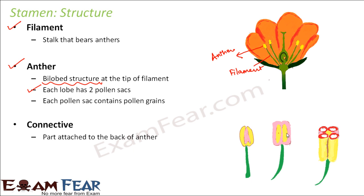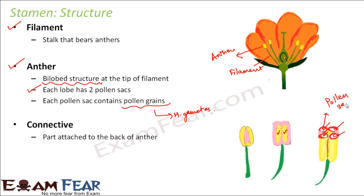As you can see in the diagram, these are the two lobes of the anther — one and two. The anther is a bi-lobed structure. In each lobe you have two pollen sacs, so there are four pollen sacs in total. Inside these pollen sacs are present the pollen grains, which contain the male gametes. We are interested mainly in the pollen grains because they are going to help in the process of reproduction. Here you can see the pollen sacs and the two lobes of the bi-lobed anther.